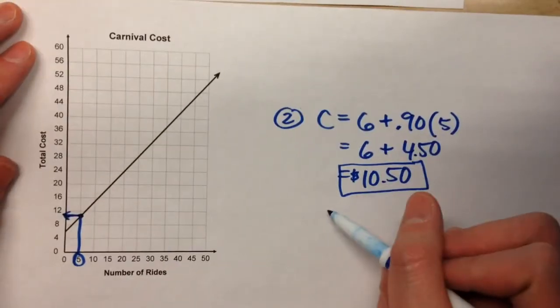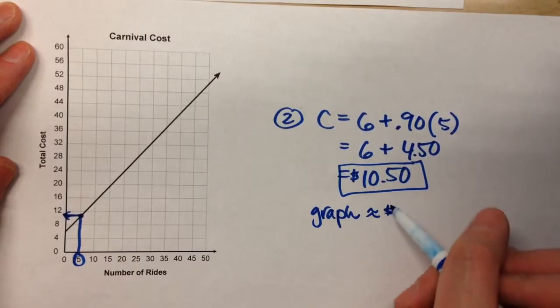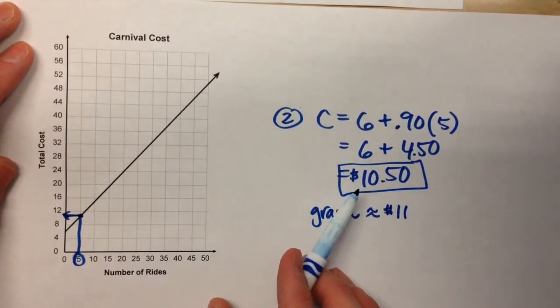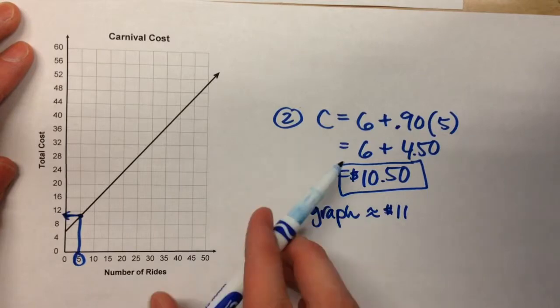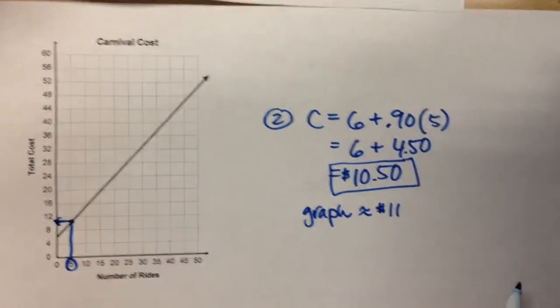So using the graph, we could estimate that it was about $11. Using the equation, we know it's $10.50. So the equation's more exact, but the graph is quicker. We'll do another one. Number three.